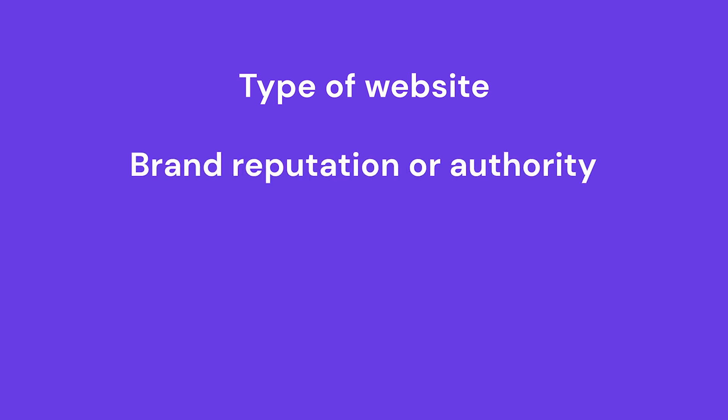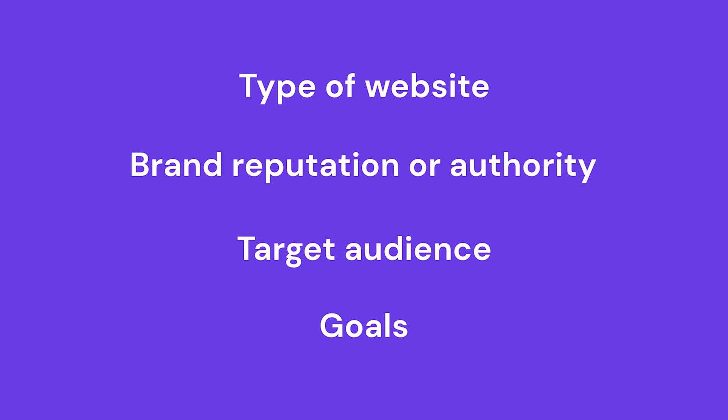Now you need to identify which keywords work for your website. Some elements to consider are: type of website — do you have a blog or an online store? For example, if you have a personal blog, transactional keywords might not be the best choice. Brand reputation or authority — do you have a loyal audience and are you known in your industry? Target audience — who should see your content? And your goals — do you want to increase sales or have more followers? Once you answer these questions, you can determine the type of content you need. Going back to our example: you have a website selling backpacks for hikers, your sales are doing well and you want to start educating your customers about hiking, so you should look for keywords with informational search intent.